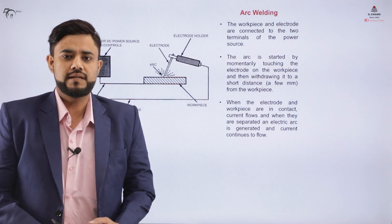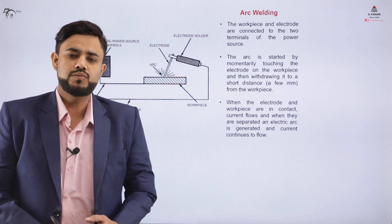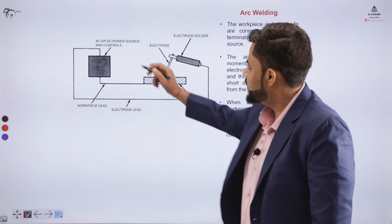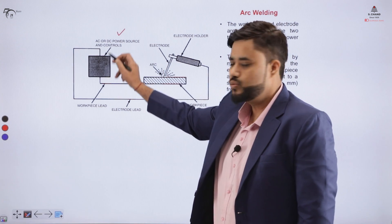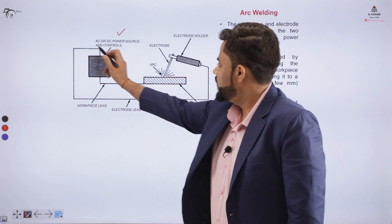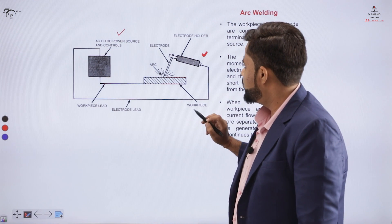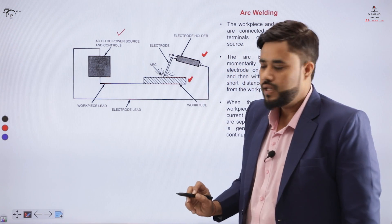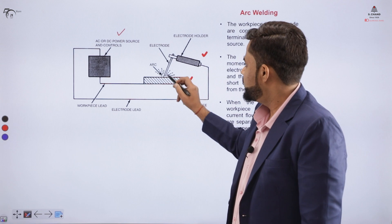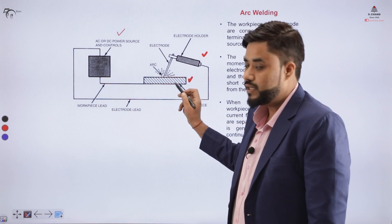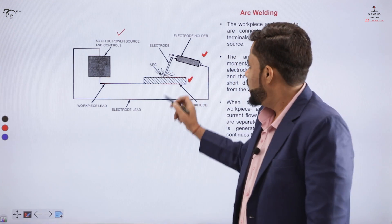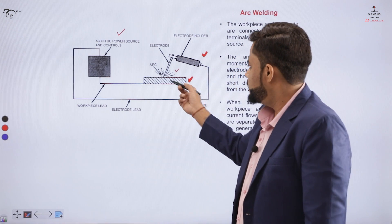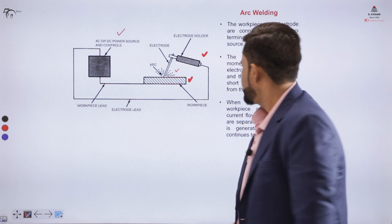Now let us see the basic apparatus used in the arc welding process. In the diagram, you can see there is an AC power source which has two terminals. One terminal is connected to the electrode holder and another terminal is connected to the workpiece. When both connections are made, there is a flow of electrons, and because of that electron flow, the arc is generated — and that arc is suitable to melt the workpiece as well as the electrode.